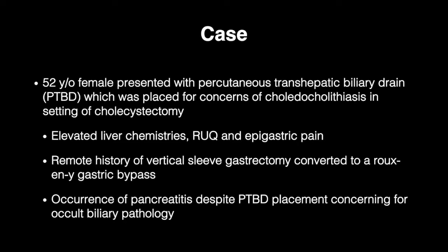The patient initially presented to an outside hospital with elevated liver chemistries along with right upper quadrant and epigastric pain. She had a remote history of vertical sleeve gastrectomy converted to Roux-en-Y gastric bypass for medically complicated obesity. She had recent acute pancreatitis despite percutaneous transhepatic biliary drain placement, which raised concern for occult biliary pathology. Abdominal ultrasound at the referring hospital was notable for common bile duct dilation of one centimeter with intrahepatic biliary ductal dilation.